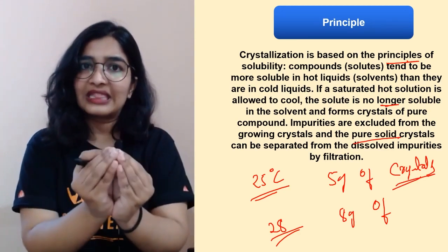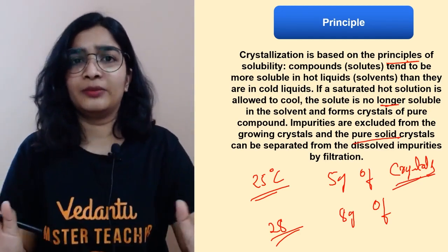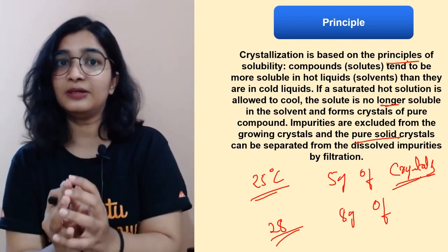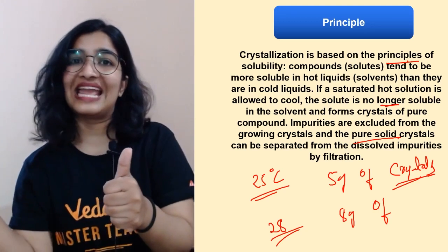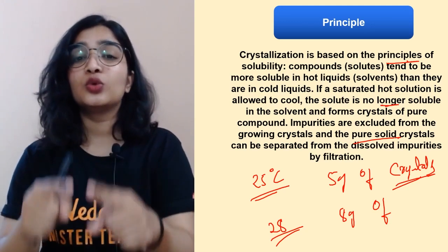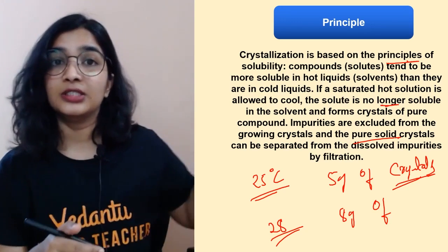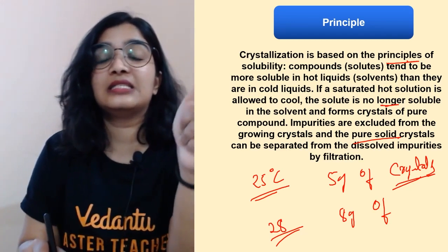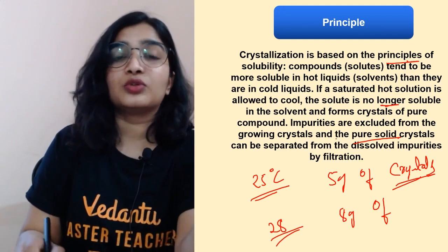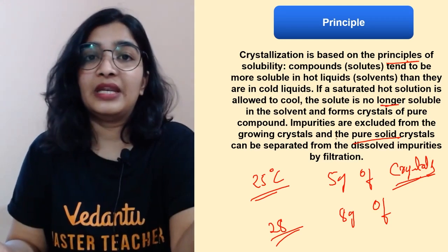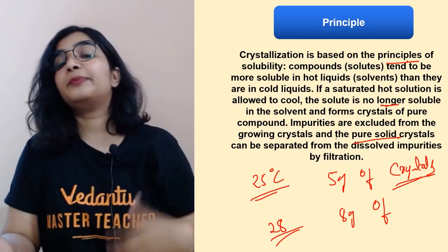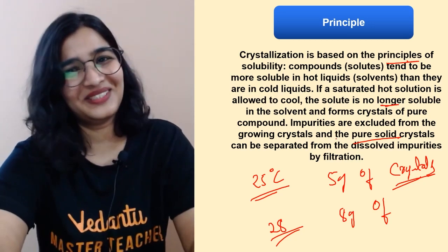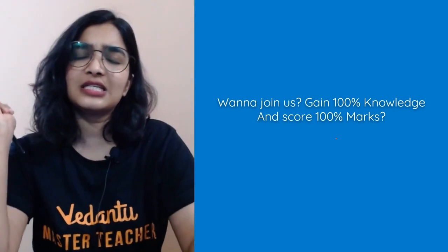Those crystals are pure — for NaCl, only sodium chloride will be present. Ionic compounds have a certain structure that won't let any impurity enter. So once the crystals are formed, the impurities remain in the solution. The crystals can then be separated by filtration. This is the principle of crystallization.